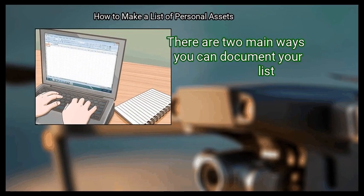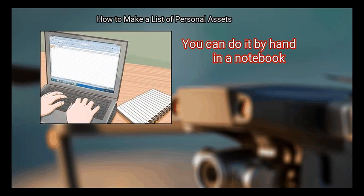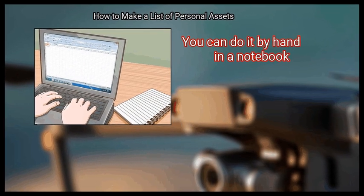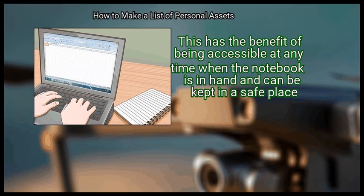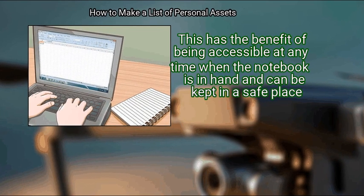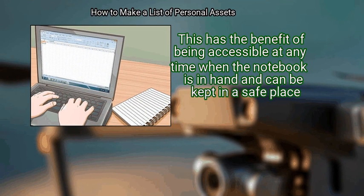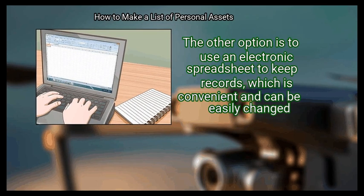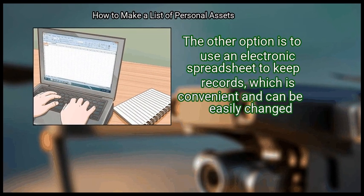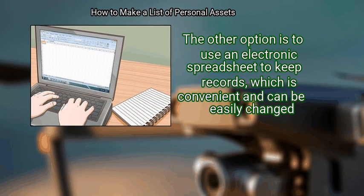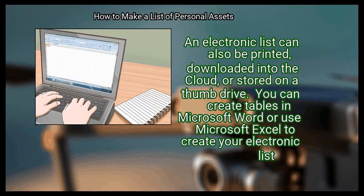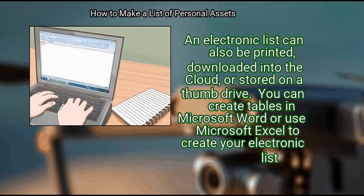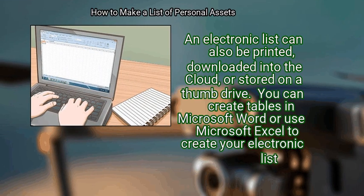There are two main ways you can document your list. You can do it by hand in a notebook. This has the benefit of being accessible at any time when the notebook is in hand and can be kept in a safe place. The other option is to use an electronic spreadsheet to keep records, which is convenient and can be easily changed. An electronic list can also be printed, downloaded into the cloud, or stored on a thumb drive.